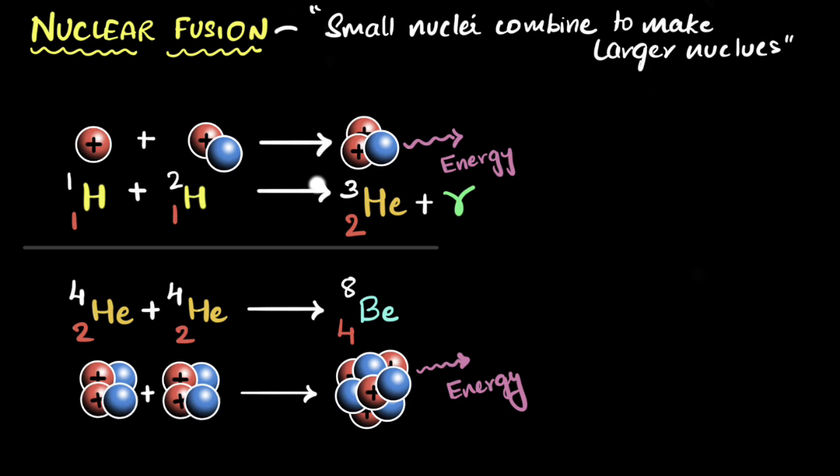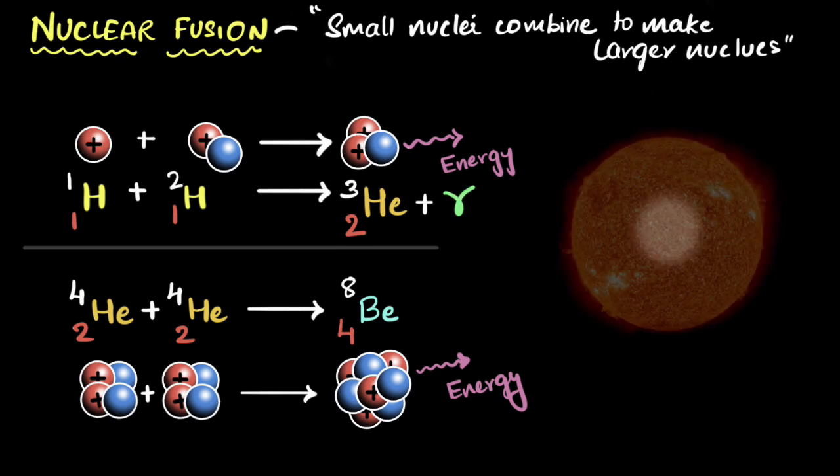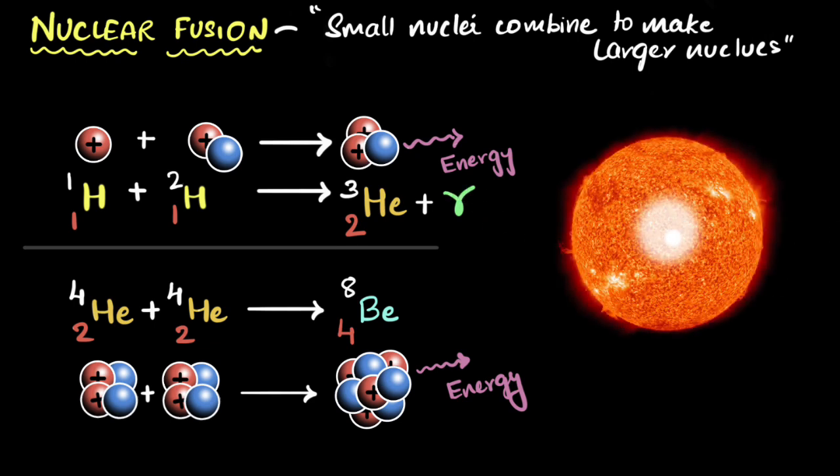But what if you consider billions and billions of reactions happening per second? Now you'll have a lot of energy coming out. And guess what? That's what powers up the stars. That's what's happening inside the core of our sun right now. Where does the sun and all the stars get their energy? Via nuclear fusion reactions. There are nuclear explosions happening in the core. Lots and lots and lots of fusion reactions happening inside the core. That's what powers up our star.